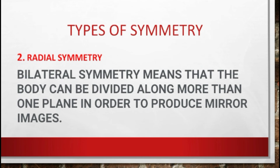Radial symmetry: an organism shows radial symmetry if the body can be divided along more than one plane to produce mirror images. In radial symmetry, body parts radiate from a central point, much like spokes on a wheel.